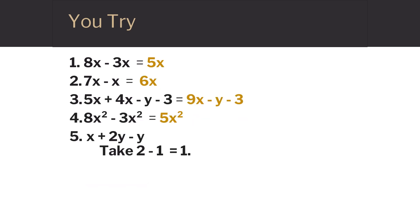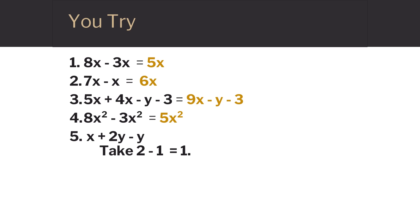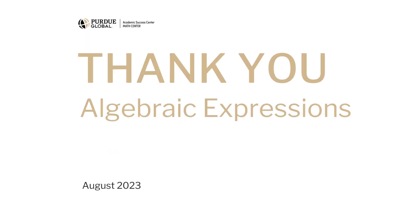In the fifth problem, x plus 2y minus y: the 2y and the y are like terms. Take 2 minus 1, that equals 1, so we have 1y. The final answer will be x plus y. Thank you for watching this video on algebraic expressions.